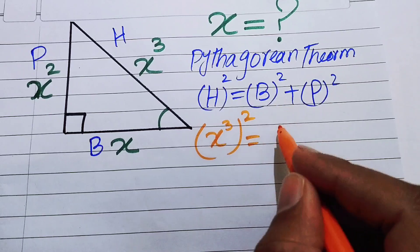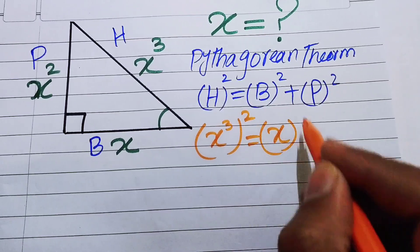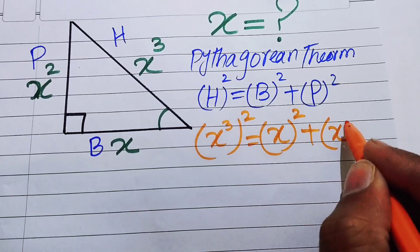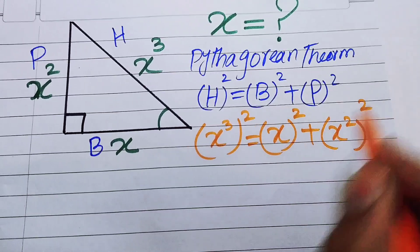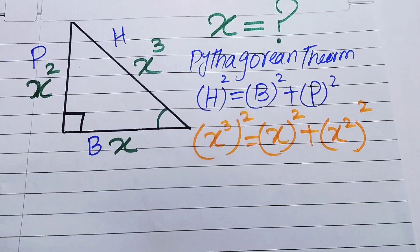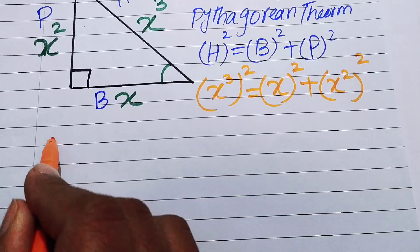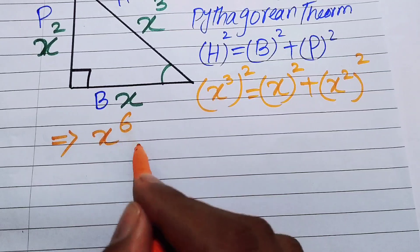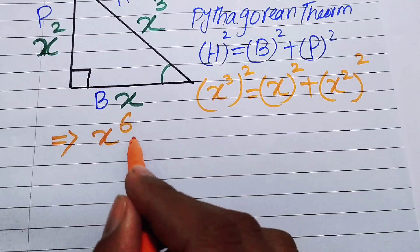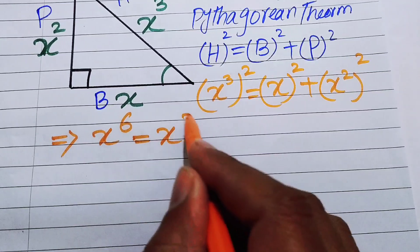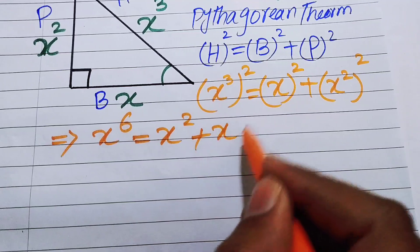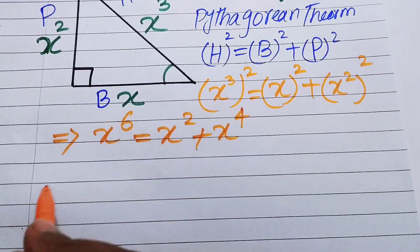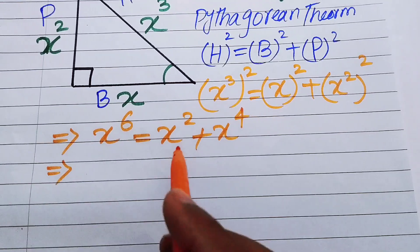...our base is x, so x², plus our perpendicular is x², so (x²)². In the next step we simplify the terms and write it as x⁶ = x² + x⁴.